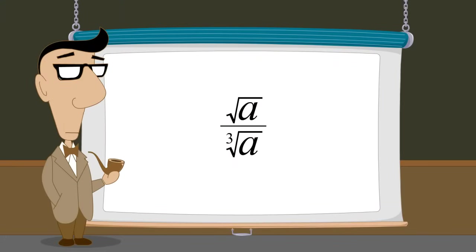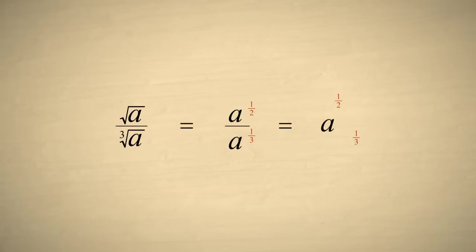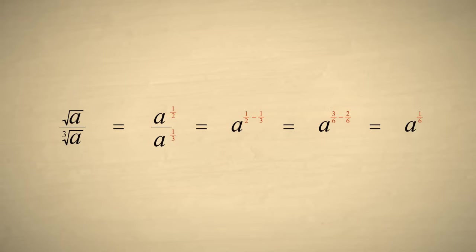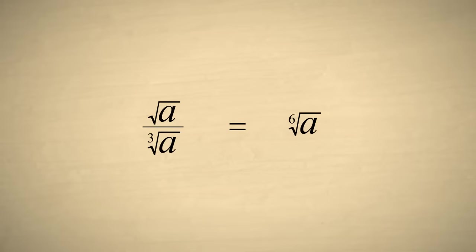As another example, let's simplify the square root of a over the cube root of a. We start by writing the square root of a as a to the one-half, and the cube root of a as a to the one-third. We can then subtract the exponents one-half and one-third. Using a common denominator of six, we write this as three-sixths minus two-sixths, which gives us a to the one-sixth, or the sixth root of a. So the square root of a over the cube root of a can be more simply written as the sixth root of a.